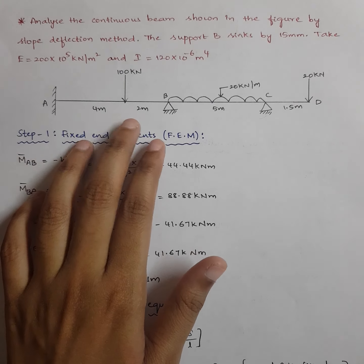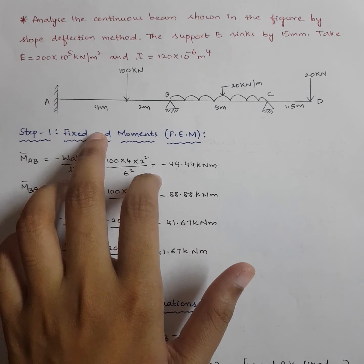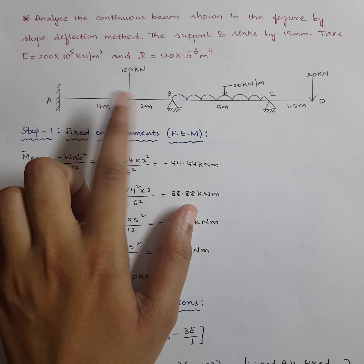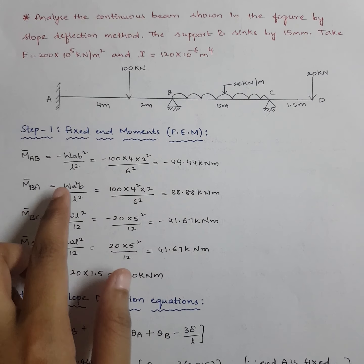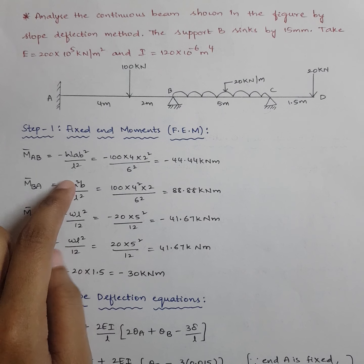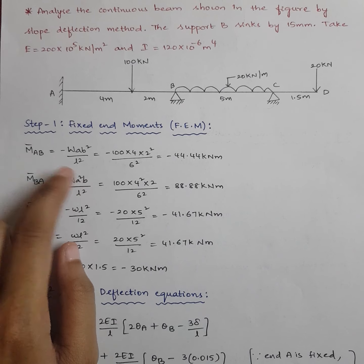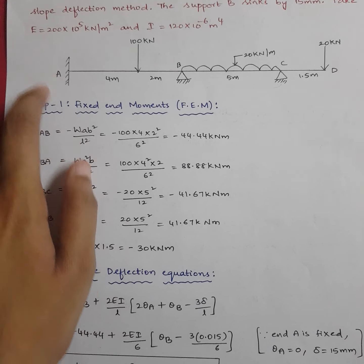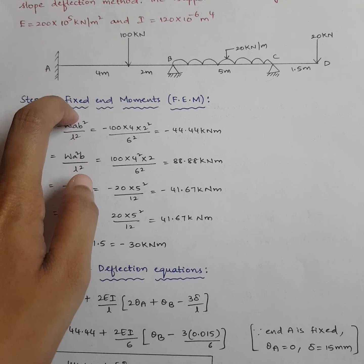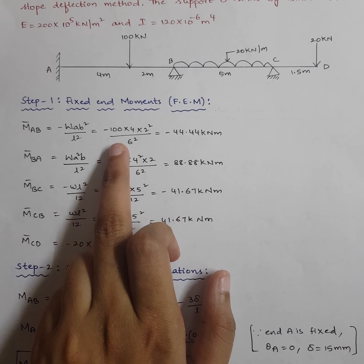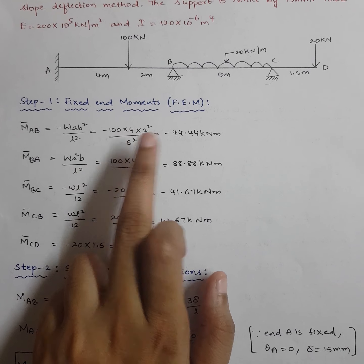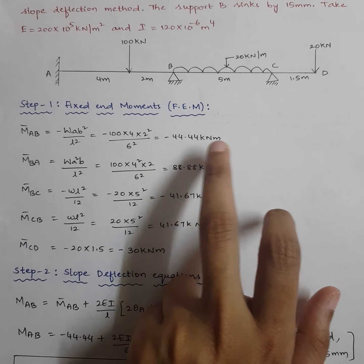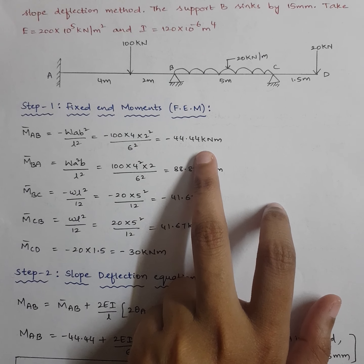M̄AB is for span AB in the anticlockwise direction. There is a point load which is eccentric, so the formula is minus WaB²/L². The reason we put a minus sign is that M̄AB is in the anticlockwise direction. So: minus 100 × 4 × 2² / 6² = minus 44.44 kN·m.